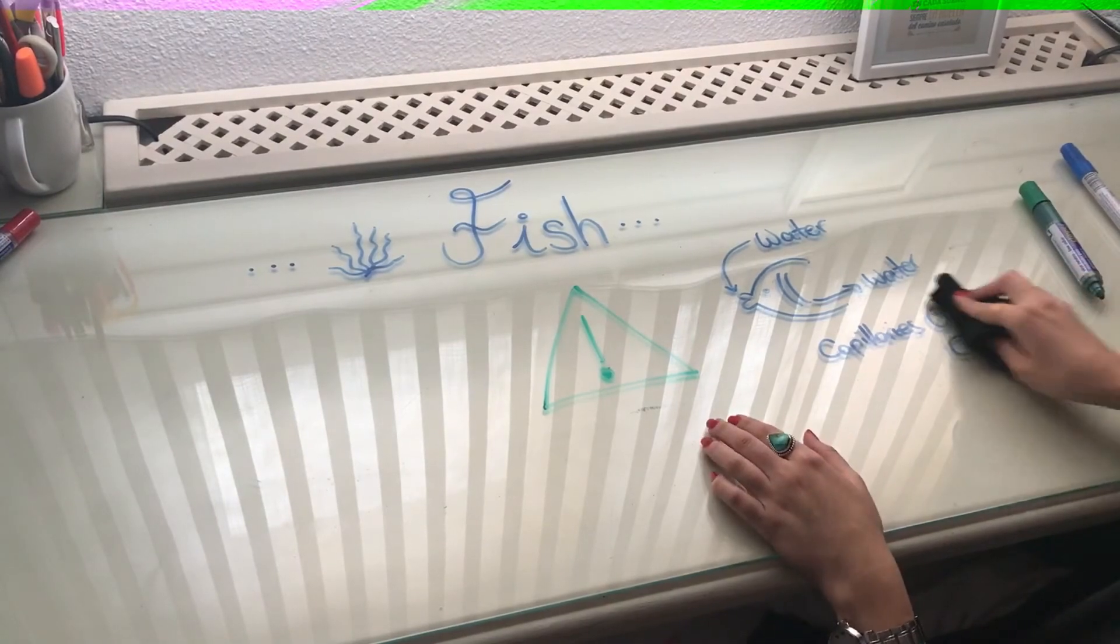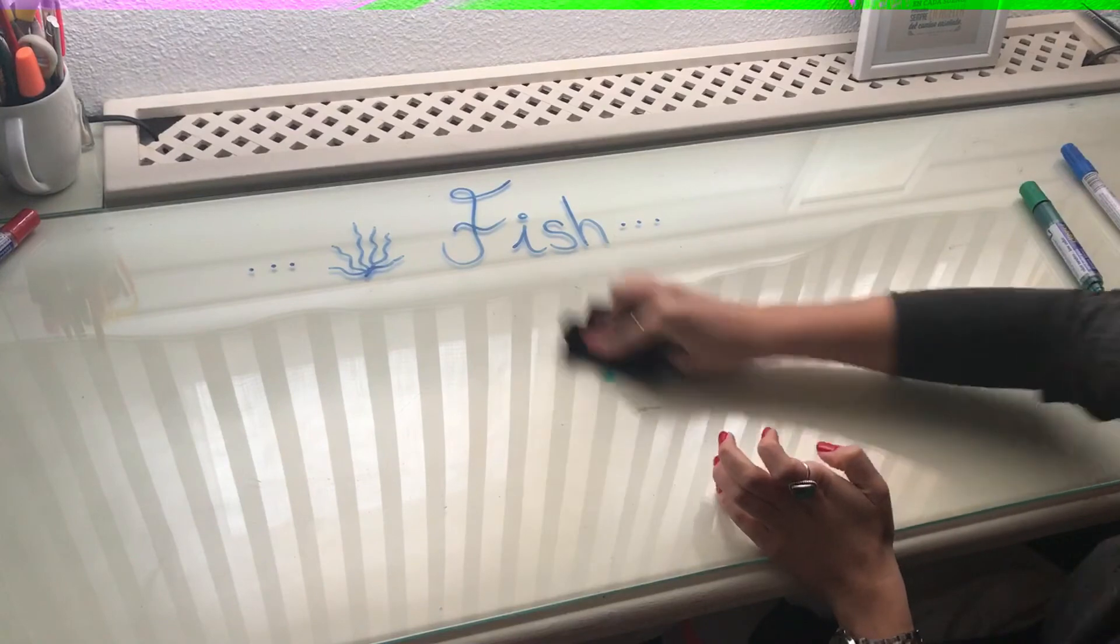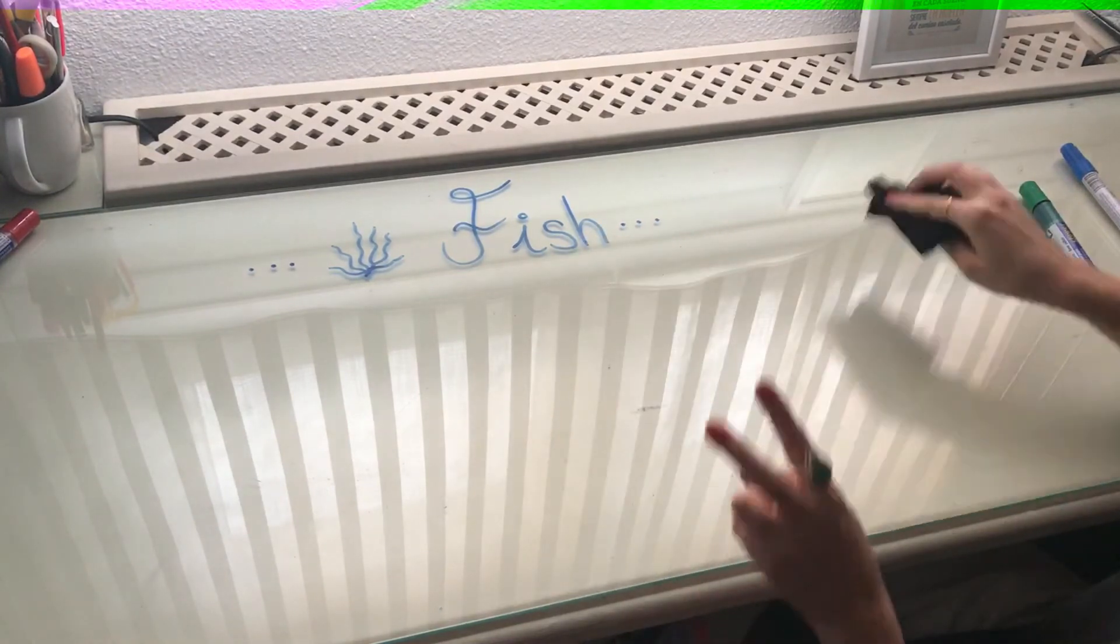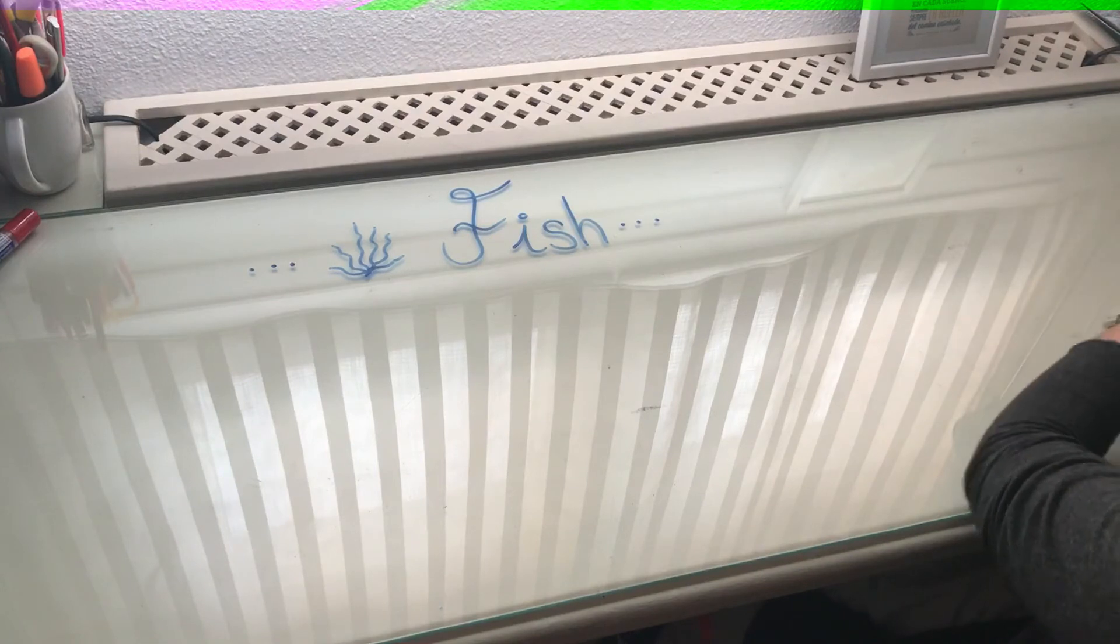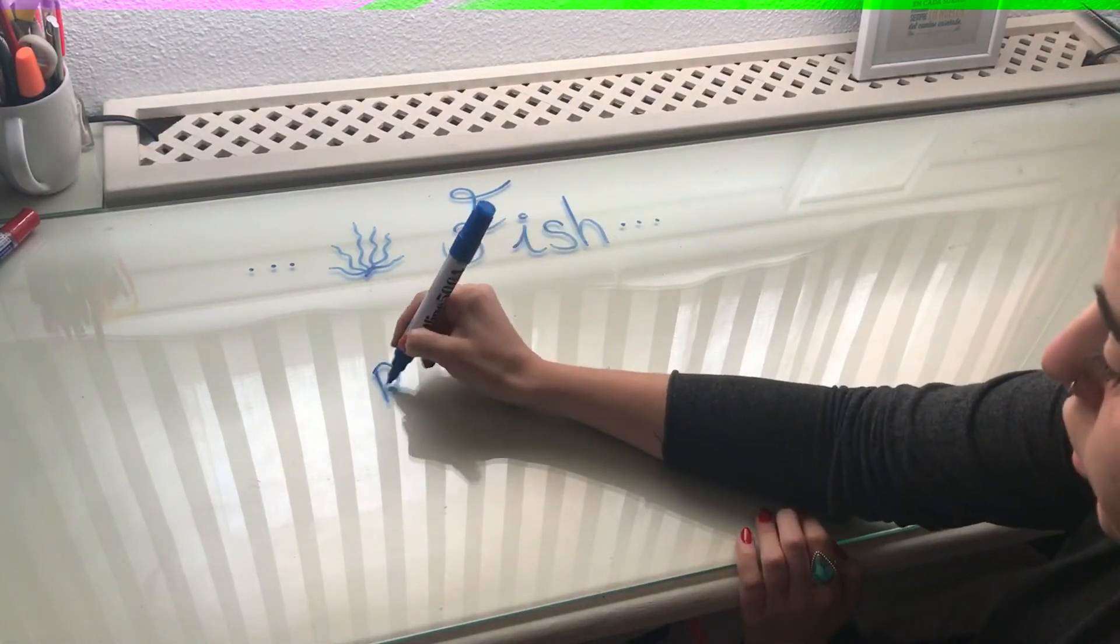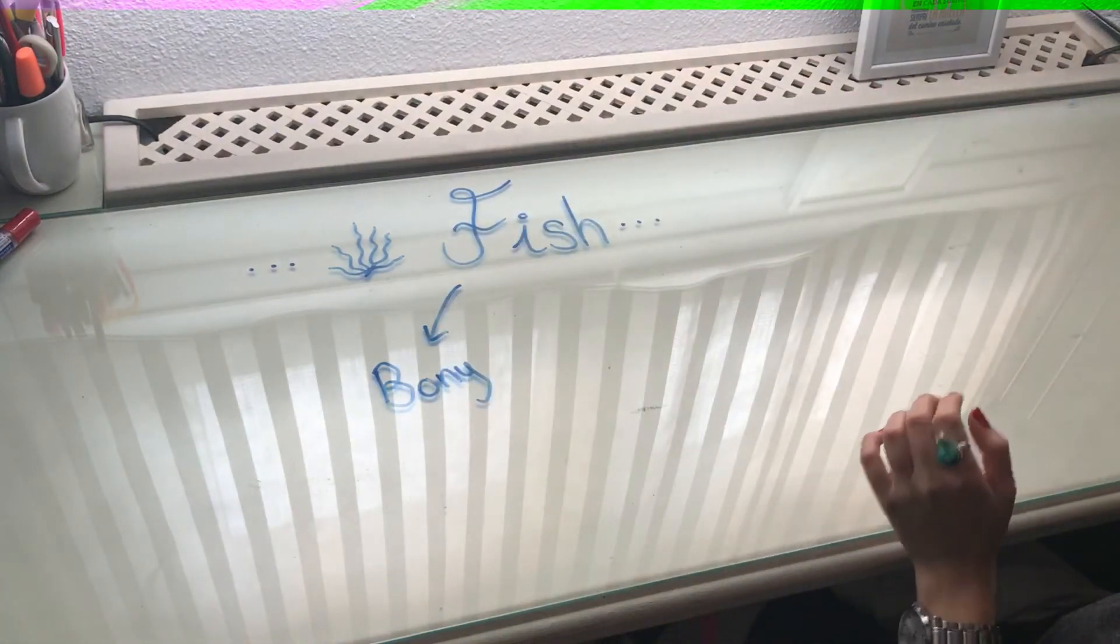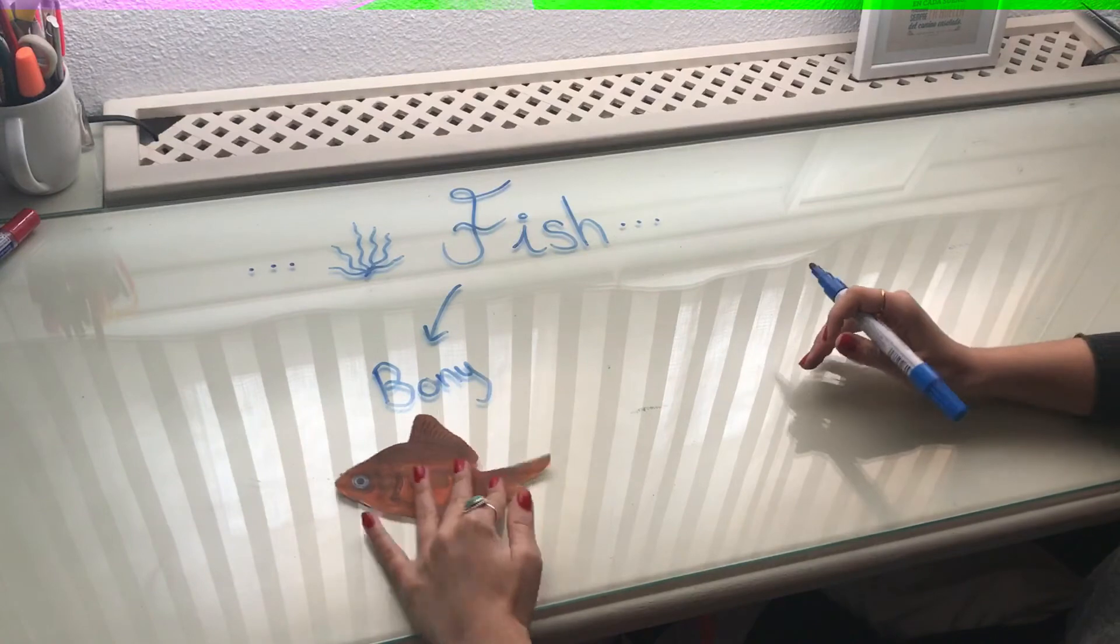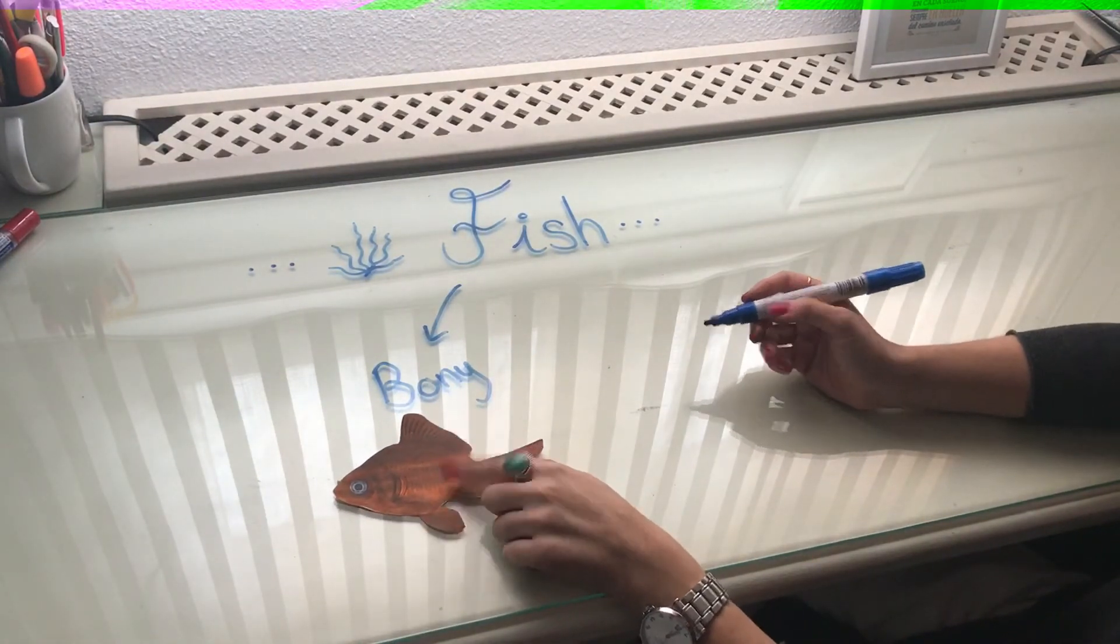Okay, now we are going to continue with the types of fishes. So we have two main types of fishes. The first one is the bony fishes. And we have again our little fish that was with us at the beginning. These are the main fishes that have hard skeleton and hard bones.